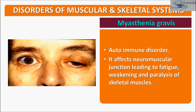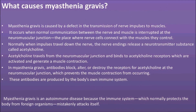Myasthenia Gravis is a neuromuscular disease caused by a transmission defect in nerve impulse to muscles — the neuromuscular junction is apparently affected. Acetylcholine, which produces muscle contraction under normal conditions, no longer produces the contractions necessary for muscle movement, leading to fatigue, weakening, and paralysis of skeletal muscles. It is caused by a defect in the transmission of nerve impulse to muscles.